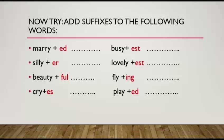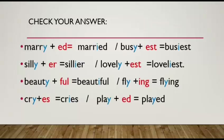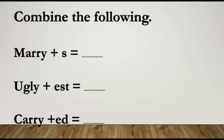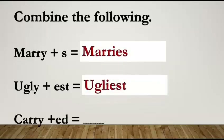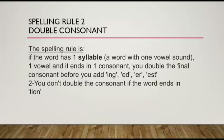Now try adding suffixes to the following words, applying the rules. Let's check the answers: 'marry' becomes 'marries'; 'ugly' becomes 'ugliest'; 'carry' becomes 'carried.' Let's move now to Spelling Rule Two — double consonants.